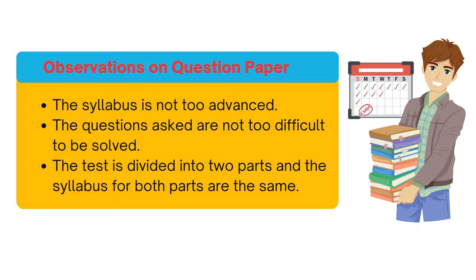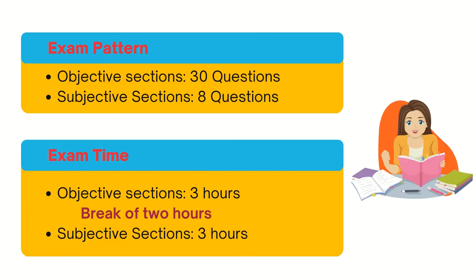The syllabus includes probability concepts. The exam is divided into two parts: objective and subjective paper. There is also an interview if you clear both rounds — though last year the interview was not organized due to COVID-19. In the objective section you get 30 questions and three hours. After a two-hour break, the subjective section has eight questions with three hours.